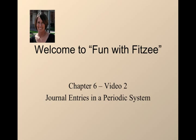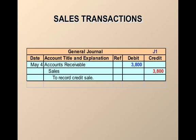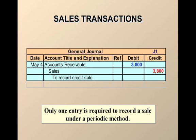So again, this is review from grade 11. For sales transactions, as you know, in a periodic system where we do not keep track of cost of goods sold and merchandise inventory on a transaction by transaction basis, only one entry is required. When we make a sale, we debit accounts receivable and credit sales for the amount. And of course, there's HST in here — this is just a simplified version of it.